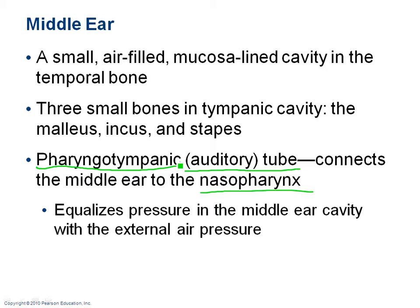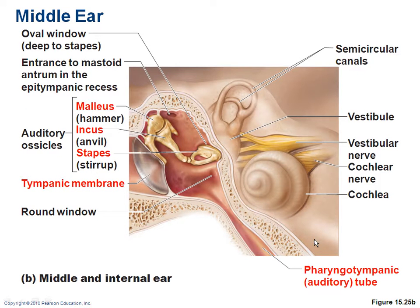The auditory tube can equalize the air pressure between the middle ear and the external environment. You have the auditory canal, then the tympanic membrane, and then the auditory tube. This equalization is important for proper hearing.